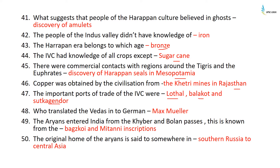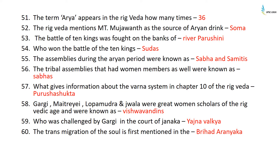Who translated the Vedas into German? It was Max Müller. The Aryans entered India from the Khyber and Bolan passes, as known from the Bogazkoy and Mitanni inscriptions. The original home of Aryans is said to be somewhere in Southern Russia or Central Asia. The term Arya appears in the Rigveda 36 times. The Rigveda mentions Mount Munjavanth as the source of the Aryan drink, Soma.